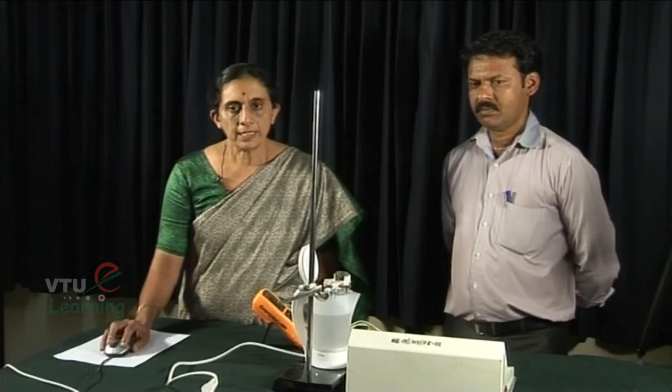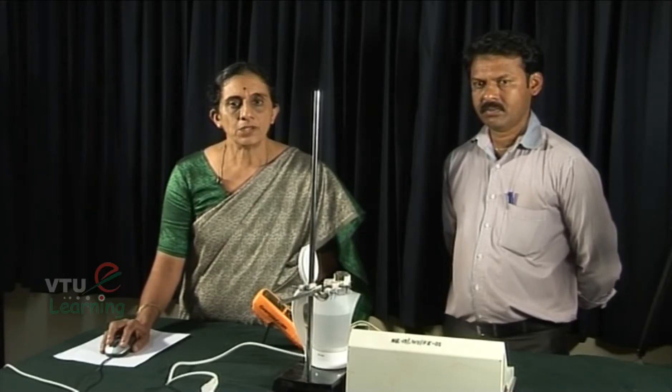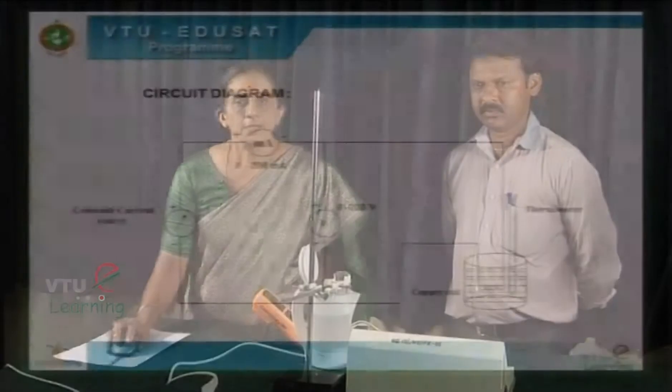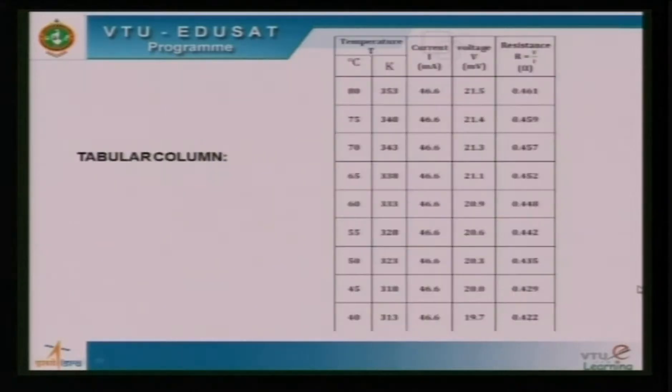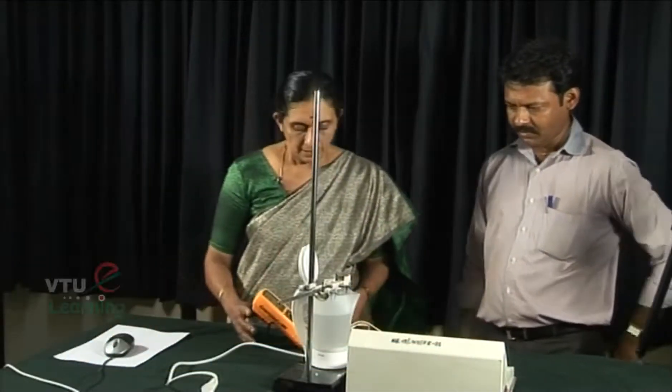We now perform the experiment to determine the Fermi energy using the circuit as shown here. We have a series connection of the constant current source, the milliammeter, and the copper coil which is immersed in hot water bath fitted with a thermometer. Either it can be a regular thermometer or a digital thermometer which is used by the digital multimeter. Then we have a voltmeter which is connected across the coil.